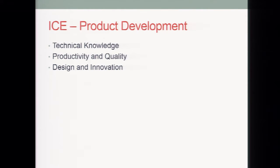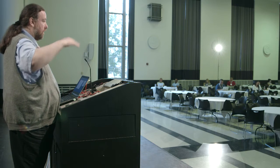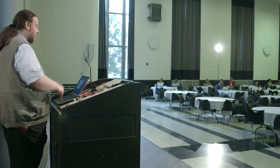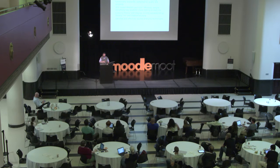If we take product development, they break that area down into three sections: technical knowledge, productivity and quality, and design and innovation. Unlike their core set, which was quite light, they go another level again. This is basically having a domain or top-level area, a competency, and then behaviours underneath that. Going into design and innovation, they get more specific — for example, 'identifies and effectively applies emerging technologies.' These are really key to how somebody operates in their job. But how do you start assessing those kinds of things? That's one of the challenges with frameworks, and each framework is completely different in that respect.